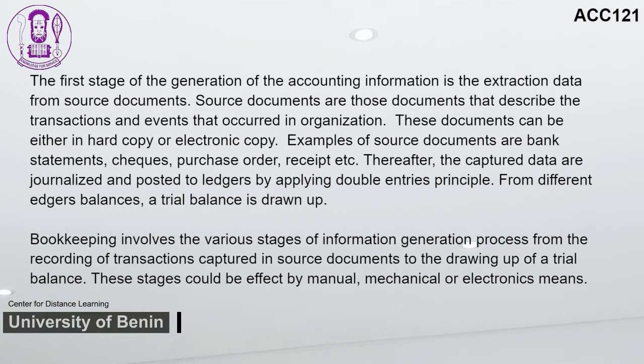Source documents describe the transactions and events that occurred in the organization and can be either in hard copy or electronic copy. Examples include bank statements, checks, purchase orders, receipts, etc. The captured data are then journalized and posted to ledgers by applying the double entry principle. From different ledger balances, a trial balance is drawn up. Bookkeeping involves the various stages of this information generation process from recording transactions in source documents to drawing up a trial balance. These stages could be effected by manual, mechanical, or electronic means.